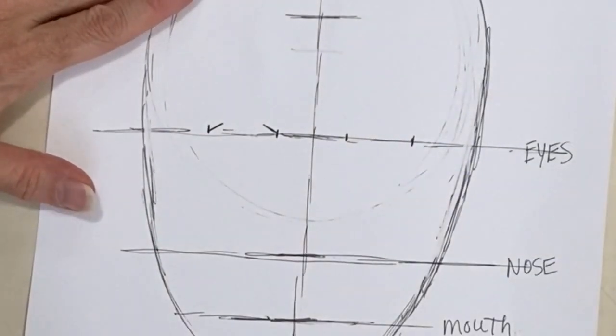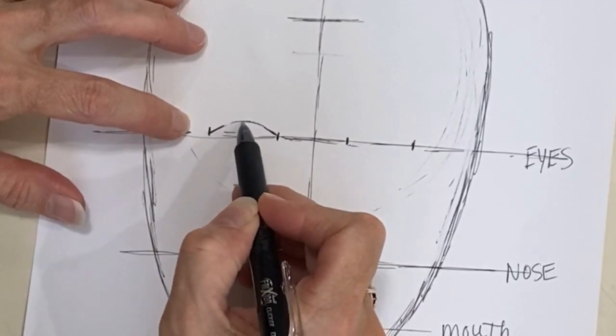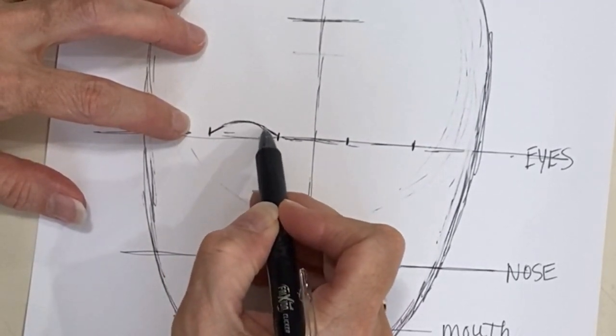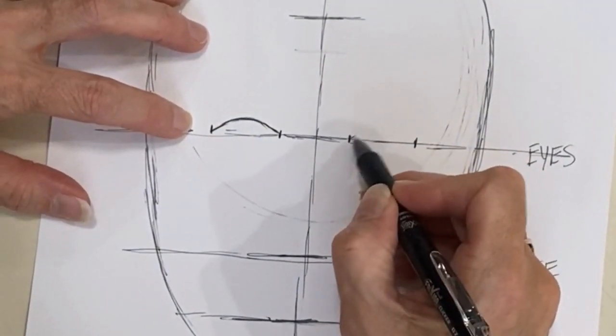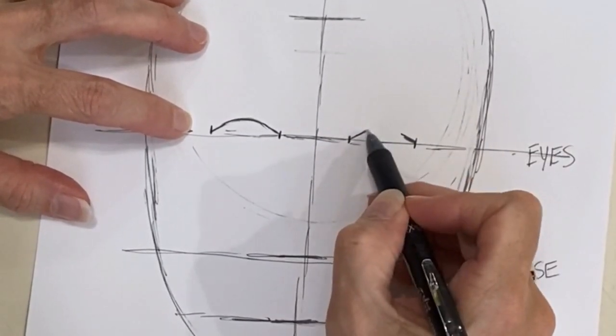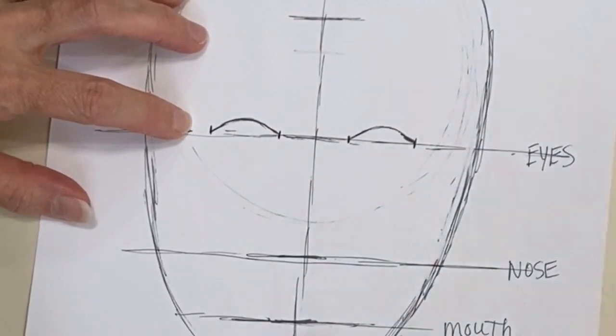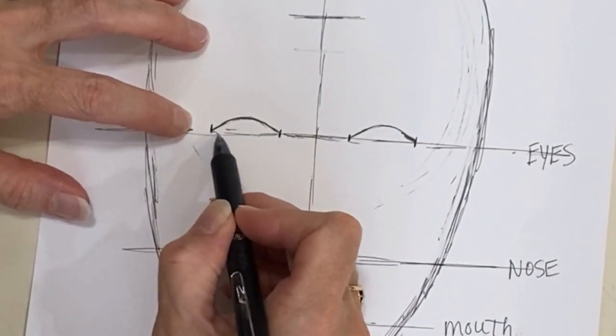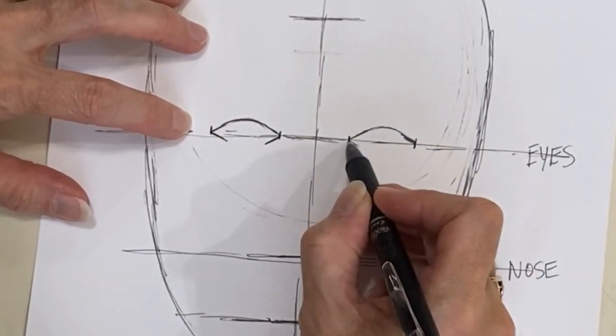And then create a nice pointy curve, downward curve for your upper eyelids. So start with a little angled line between those marks and then round it over to be the height of your eye.